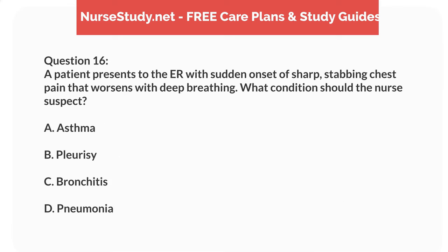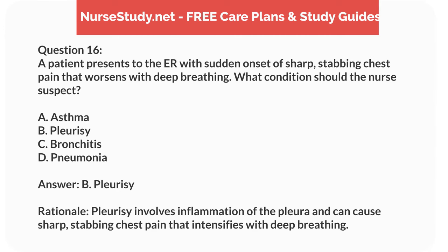Question 16. A patient presents to the ER with sudden onset of sharp, stabbing chest pain that worsens with deep breathing. What condition should the nurse suspect? A. Asthma. B. Pleurisy. C. Bronchitis. D. Pneumonia. Answer: B. Pleurisy. Rationale: Pleurisy involves inflammation of the pleura and can cause sharp, stabbing chest pain that intensifies with deep breathing.